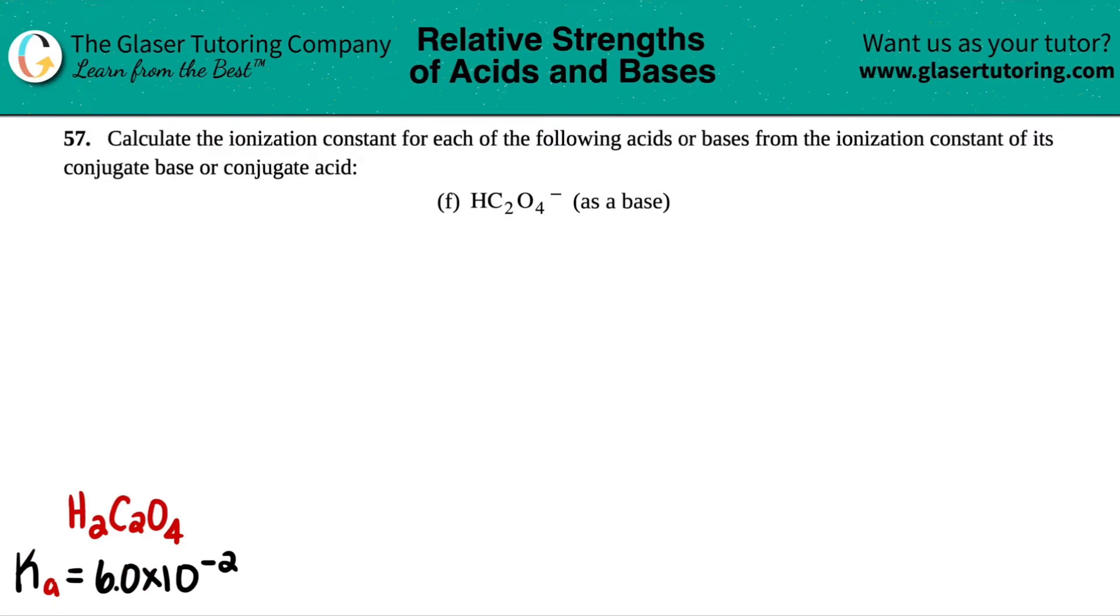Number 57. Calculate the ionization constant for each of the following acids or bases from the ionization constant of its conjugate base or conjugate acid. And then we have letter F. I really thought that the last one was the last question, but I guess not. Letter F is the last one out of this number.